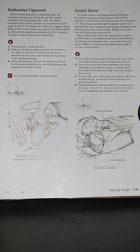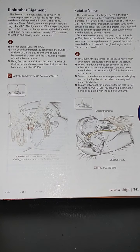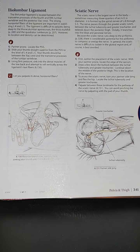Continue down the middle of the posterior thigh — this is the location of the nerve. To access the sciatic nerve, turn your partner sidelying and flex the hip. Locate the ischial tuberosity and greater trochanter. Palpate between these landmarks for the pathway of the sciatic nerve, and you can avoid pinching the nerve by palpating with the pad of your thumb. See you guys on page 342.